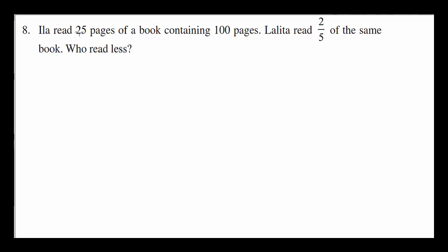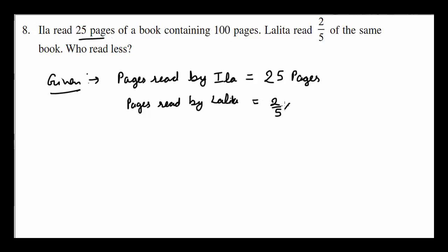So let's look at this. Eighth one. Ella read 25 pages of a book containing 100 pages. Lalitha read 2 over 5 of the same. So we are given with pages read by Ella, 25, and out of total 100. So 25 pages she read. And pages read by Lalitha, 2 over 5 is 2 over 5 of the same. Same means the 100 because the book is same.